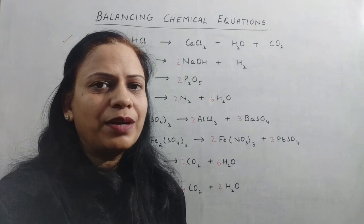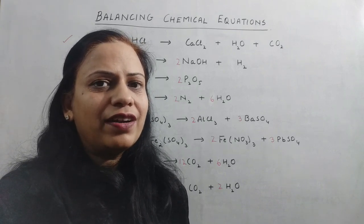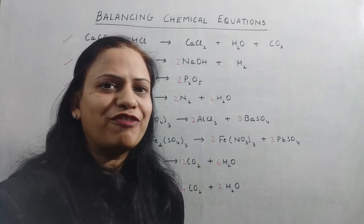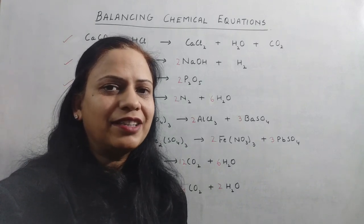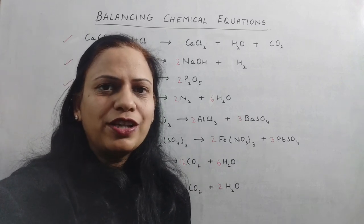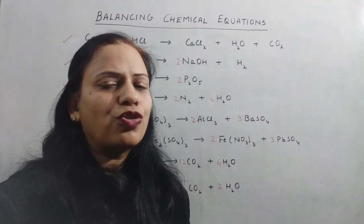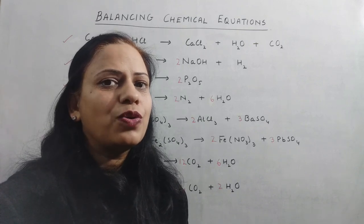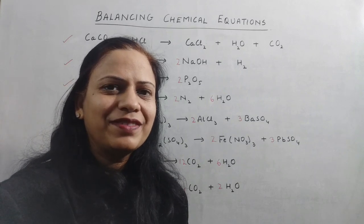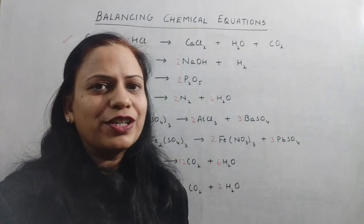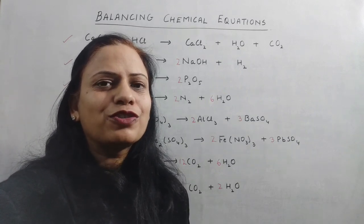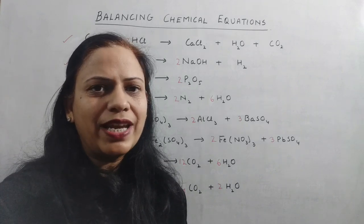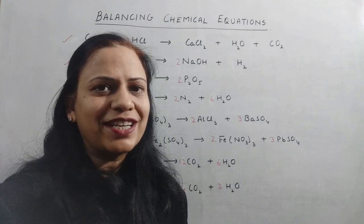This is how we balance chemical equations. Remember why balancing is important — whenever a chemical reaction takes place, it must follow the law of conservation of mass, which states that mass can neither be created nor destroyed. The total mass of the reactants must always equal the total mass of the products, which is only possible if the equation is balanced. Please practice at home with more equations, and post any queries in the comment section.